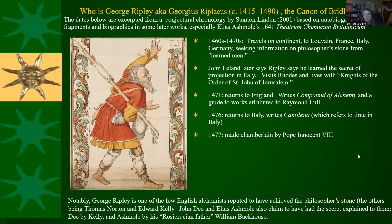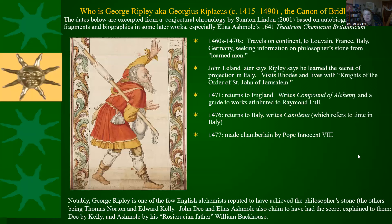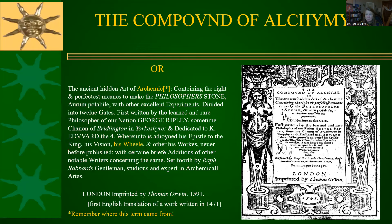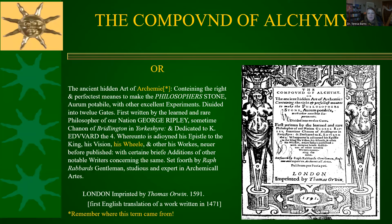Ripley returns to Italy, writes some verses, is made a chamberlain by the Pope, then returns to England in 1478 in possession of the secret of transmutation. He becomes a Carmelite, and in 1490 he dies. Here's the cover of the first English translation — the 1471 version was in Latin. This work is very associated with Dee and Kelly, among others. There's a poem in it that seems to be about Dee, and there's a poem by Sir Edward Kelly. I'll put a link below to analysis I did of that, because it's a fascinating poem.